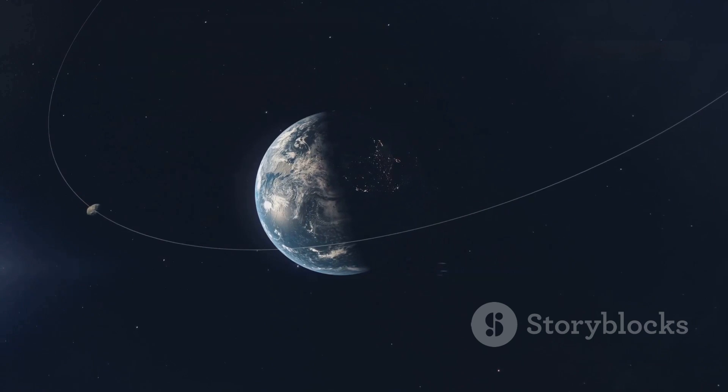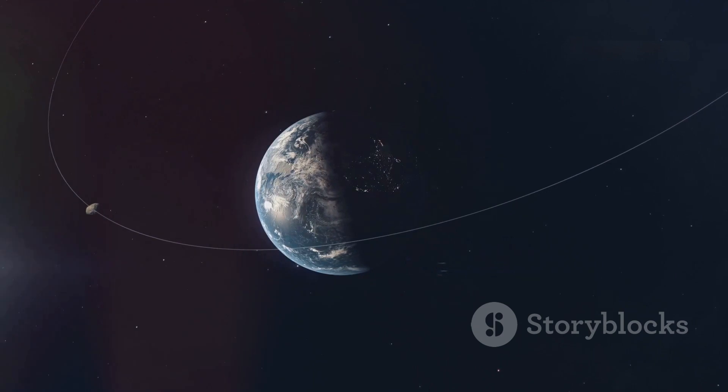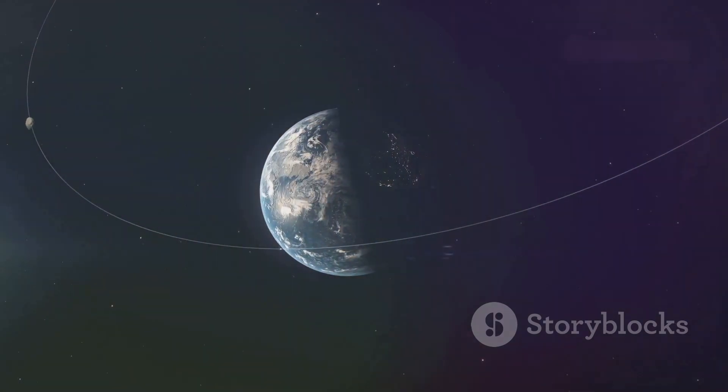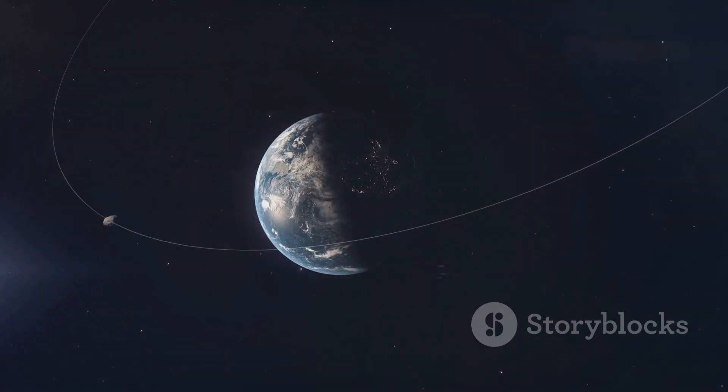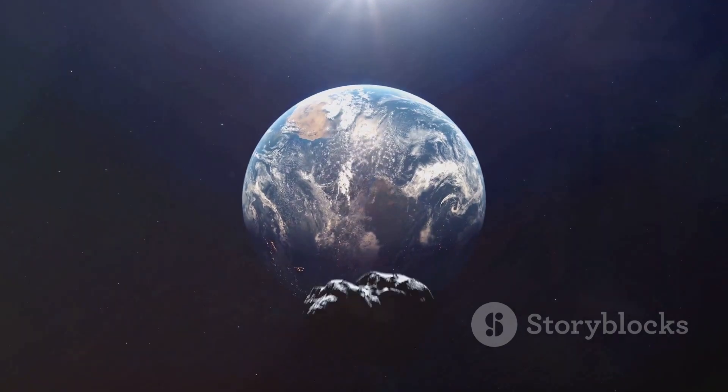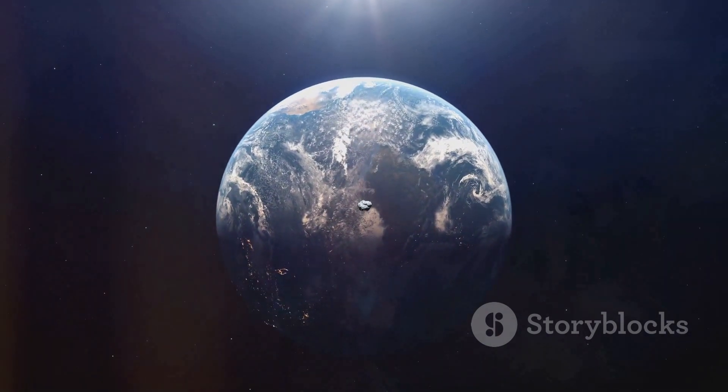Once it enters Earth's gravitational field, the asteroid will settle into an elliptical orbit. This orbit will vary in distance from Earth as the asteroid circles us, giving scientists plenty of time to study it. After 56 days, the asteroid will gain enough speed to escape Earth's gravity and continue its journey through space.